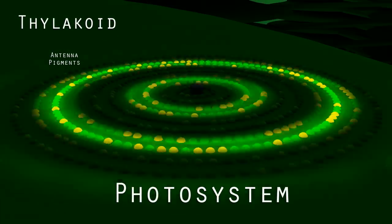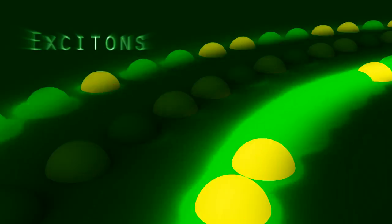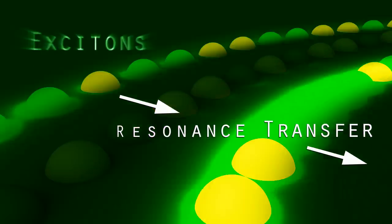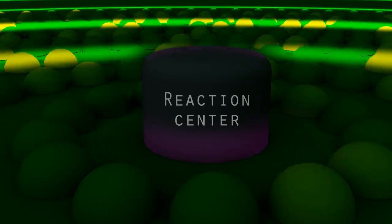Along the thylakoid membrane are photosystems containing many photosynthetic pigments. Using resonance transfer, antenna pigments guide light energy toward a reaction center in the form of excitons.